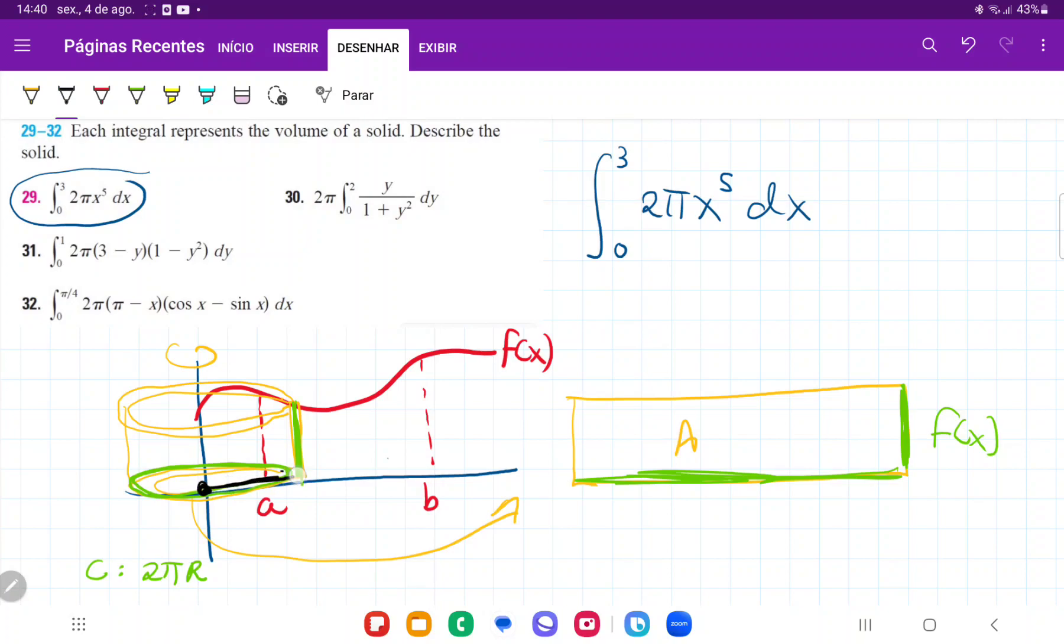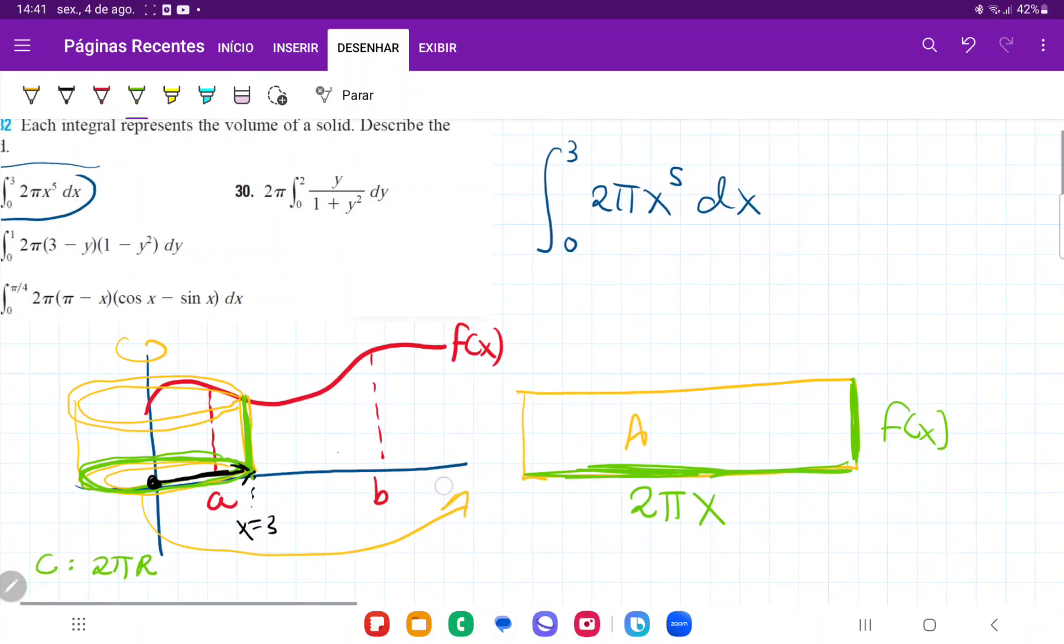So my radius increases as I go along my x-axis, and therefore, this base here is just the circumference, which is 2πx. This gives us the expression for this circumference right here.